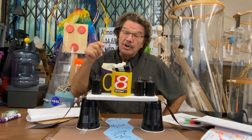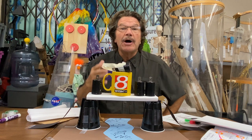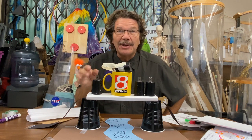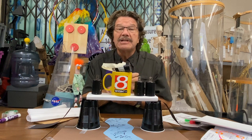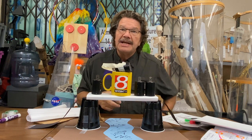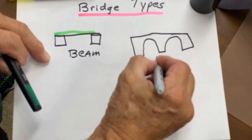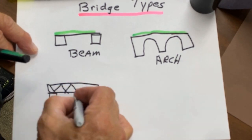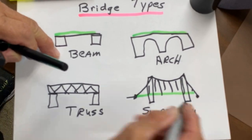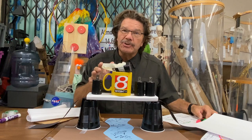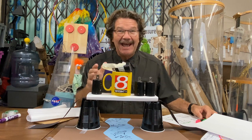Before you build your prototype and test it, you might want to look around the world to see how other people have built bridges — do a search, it's kind of cool. You may also want to look at the different types of bridges: the beam bridge, the arch bridge, the truss bridge, and the suspension bridge. Whatever design you use, make sure you test it, improve it, and test it again, and have some fun.